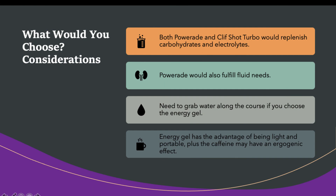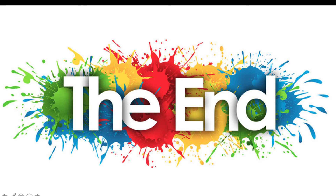Comparing sports drink options: both PowerAde and Clif Shot Turbo would replenish carbohydrates and electrolytes. PowerAde also fulfills fluid needs, while the Clif Shot Turbo is a gel that must be taken with water. The energy gel has the advantage of being light and portable, and it contains caffeine — so some athletes use it during competition to increase heart rate and energy, as long as caffeine is not banned in their event. That is the end of fitness and sports part two.